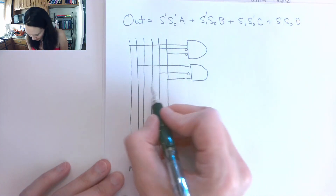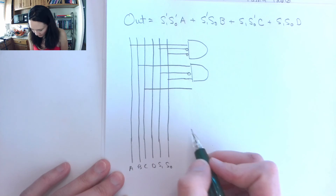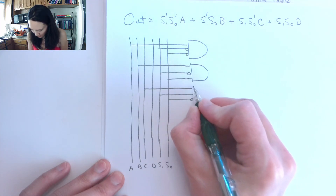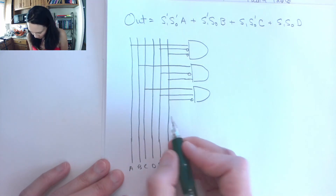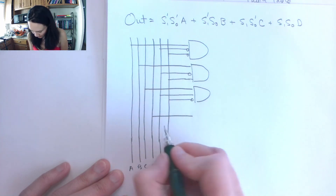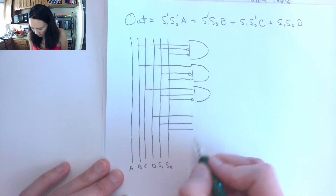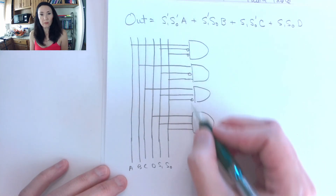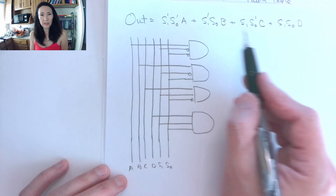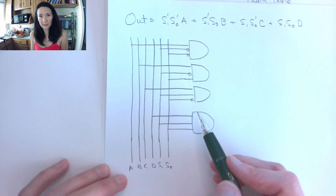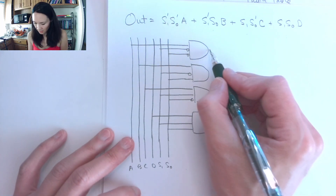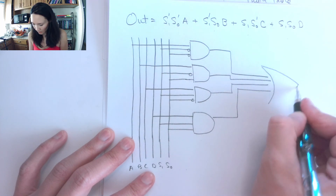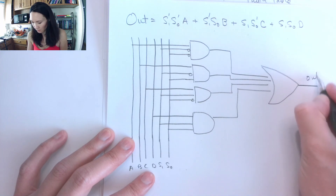The third product term: I grab C, S1, and S0 — the one I complement is S0 — and AND all these together. Finally, I grab D for my last product term along with S1 and S0; nothing gets complemented here, so I have my final AND gate. These represent all four product terms, each implemented with a three-input AND gate. All of these are getting OR'd together, so I take the outputs of all these ANDs and put them into a four-input OR gate, and this gives me my output. This circuit array implements a four-to-one multiplexer.